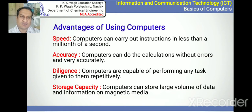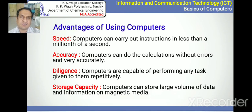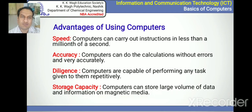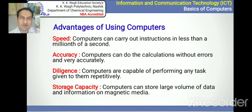The advantages of computers include speed — we can calculate mathematical formulas or transfer information from one location to another thousands of kilometers away within a second. Accuracy — whatever data we give the computer, it accurately calculates and gives accurate results. Diligence — computers can perform any task repeatedly without fatigue because they are machines. And storage capacity — computers can store large volumes of data and information on magnetic media.